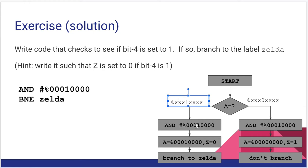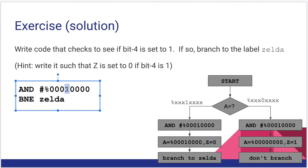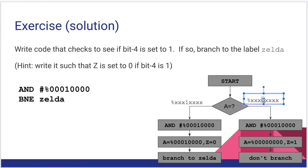If bit 4 is one and we do an AND with a one there, our result comes out non-zero, meaning the Z flag is set to zero. Our branch-if-not-equal will branch past to our next code section. On the other side, if we do an AND with bit 4 set to one but the accumulator had a zero in bit 4, that gives us an accumulator value of zero, setting the Z flag to one. In that case our branch-if-not-equal gets skipped over and we execute whatever code comes next.